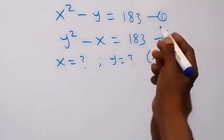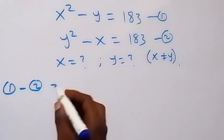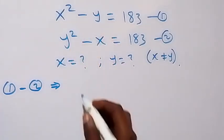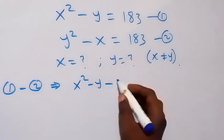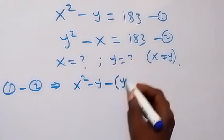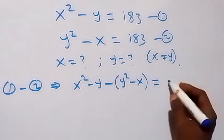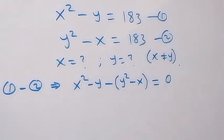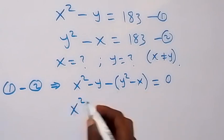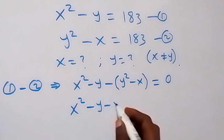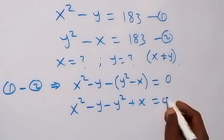In the first step, let's subtract equation 2 from equation 1. That is equation 1 minus equation 2. On the left hand side, equation 1 gives us x squared minus y, then minus equation 2 left hand side, that is y squared minus x. On the right hand side, we subtract, so 1 into 3 minus 1 into 3 becomes 0.